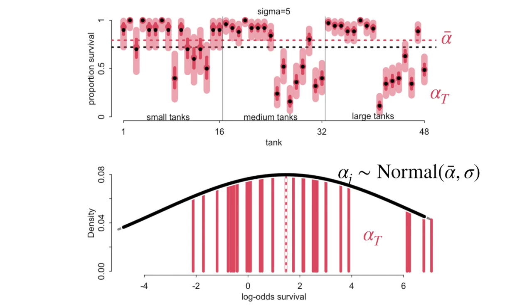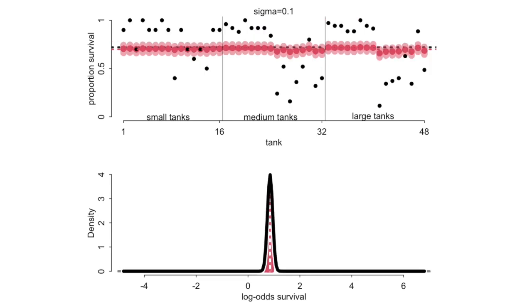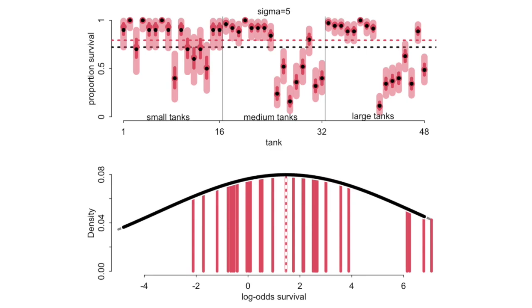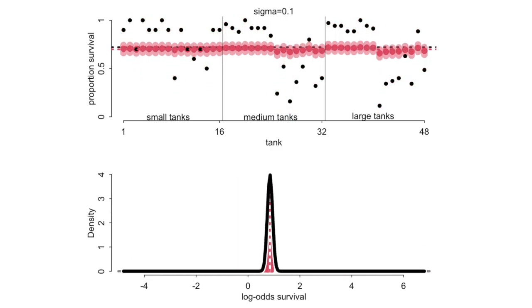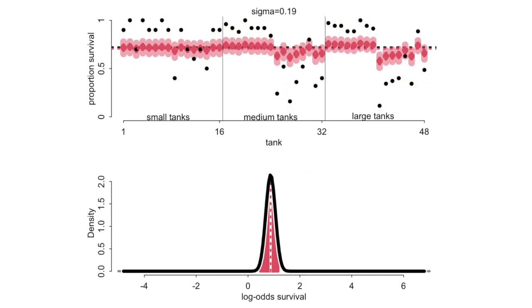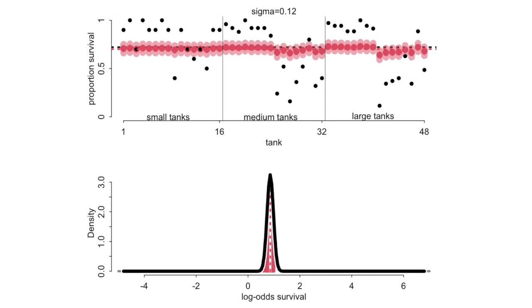Alpha bar has moved now — it has shifted away because of the dispersion of the individual alpha estimates. As sigma shrinks back down and spreads out again going up to 5 and back down, it's clear that when sigma is 0.1 it's not a good model. That prior is way too tight and the model is radically underfit — we'd expect it to make really bad predictions about any additional experimental groups of tadpoles.